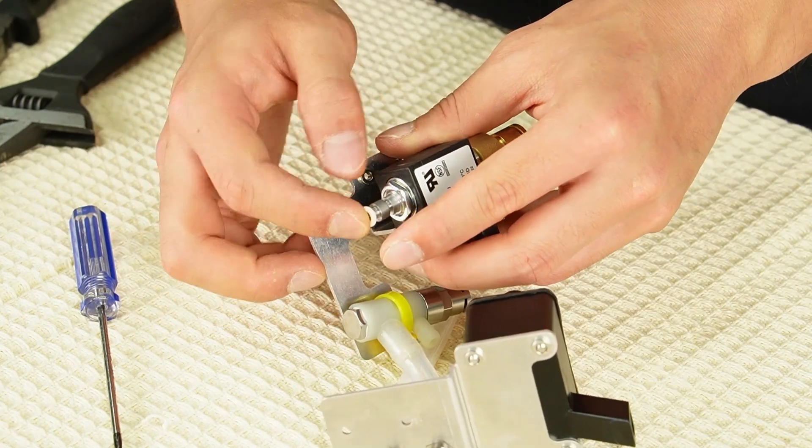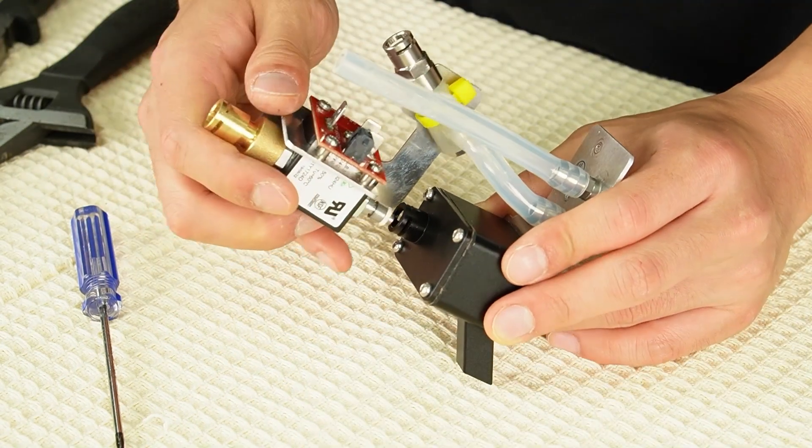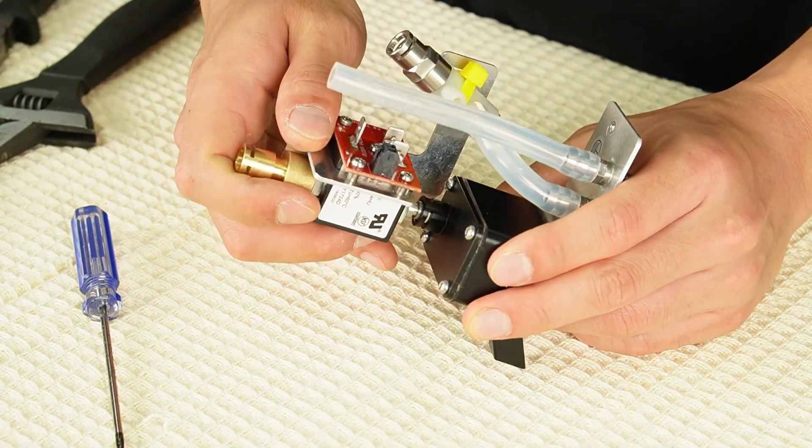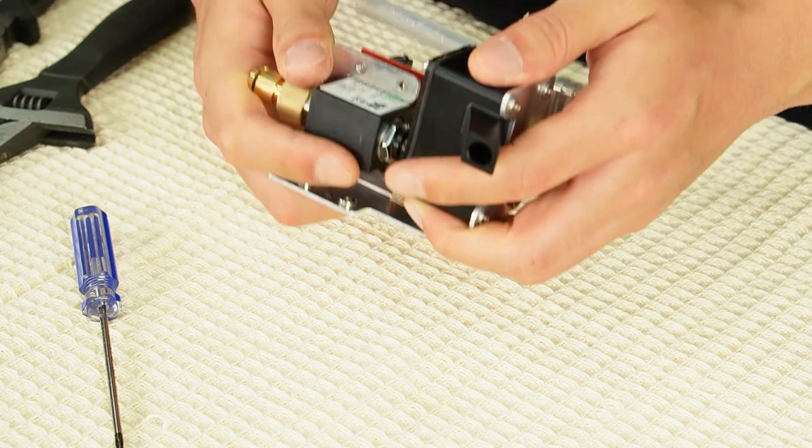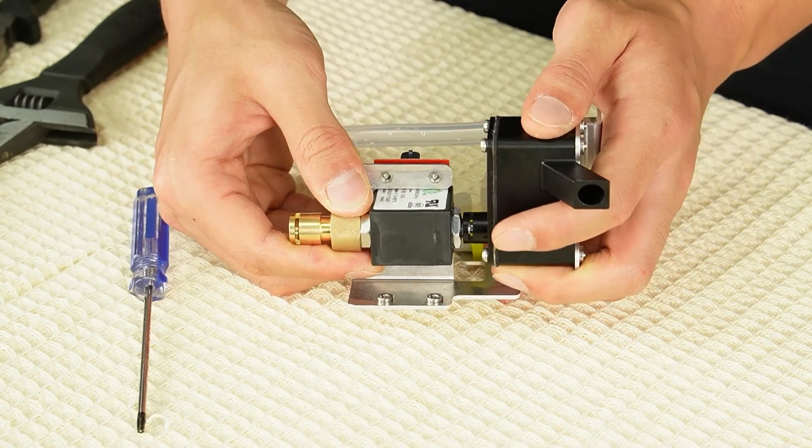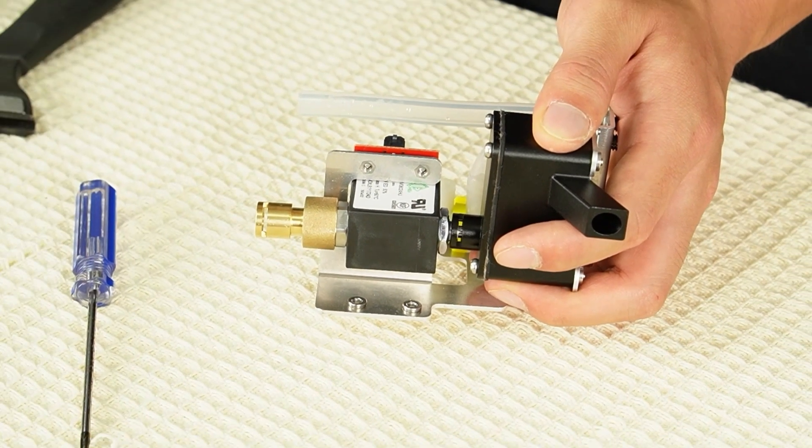Place the O-ring onto the end of the valve. Then insert the valve back into the connector. If it feels tight, use a gentle circular motion as you push it in. Once fully inserted, the narrower section of the valve will be visible through the clip slot. Then reinsert the clip.